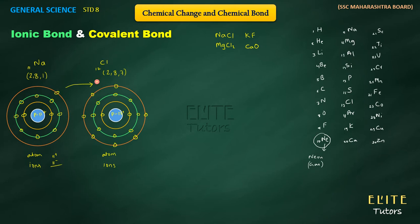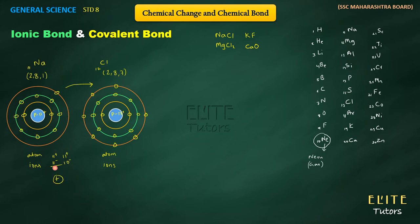This gives sodium a net positive charge — it becomes Na+. Positive ions are called cations. For chlorine: it originally had 17 protons (+17) and 17 electrons (-17), making it neutral. When it accepts 1 extra electron, it now has 18 negative charges but only 17 positive charges, giving 1 extra negative charge — chlorine becomes Cl-. Negative ions are called anions.